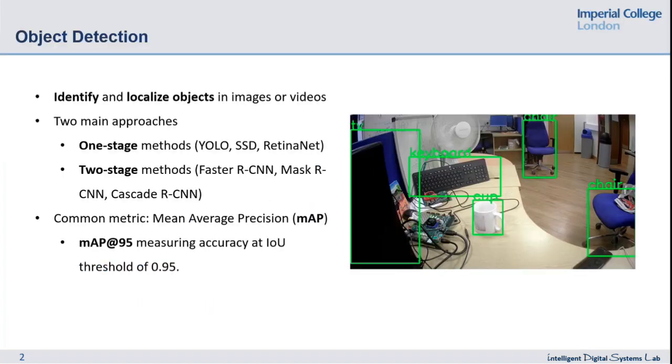Object detection is the task of identifying and localizing objects in images or videos. There are two main approaches: one-stage methods like YOLO, SSD and RetinaNet models, and two-stage methods like Faster R-CNN, Mask R-CNN and Cascade R-CNN models.